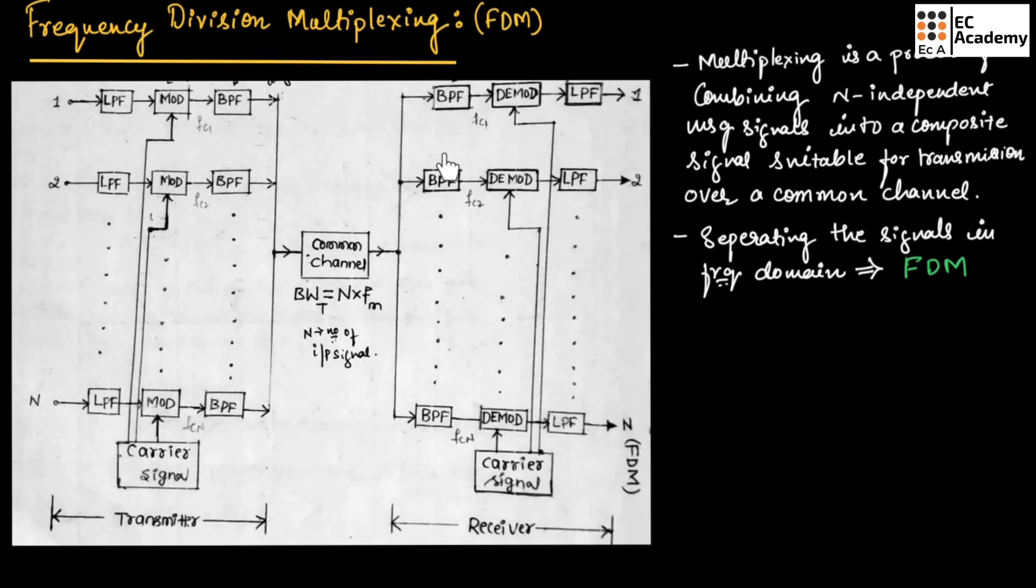At receiver side, N number of independent message signals are recovered by passing through band pass filter. Then, these signals are demodulated using a demodulator. Then, these signals are passed through the low pass filter, and the original message signals are recovered.